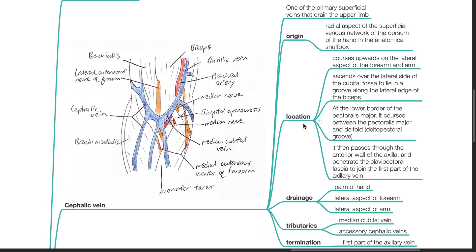The course of the cephalic vein: it courses upwards on the lateral aspect of the forearm and the arm. It ascends over the lateral side of the cubital fossa to lie in a groove along the lateral edge of the biceps brachii. At the lower border of the pectoralis major, it courses between the pectoralis major and the deltoid at the deltopectoral groove. It then passes through the anterior wall of the axilla and penetrates the clavipectoral fascia to join the first part of the axillary vein.